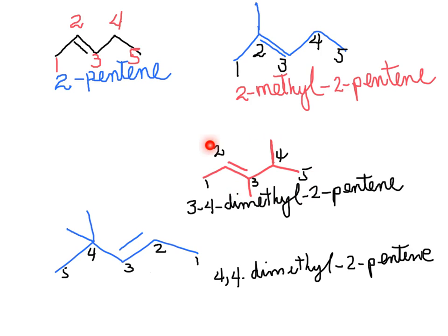When we start numbering for the third structure, we might think to start on the carbon with a branch, but the functional group — the carbon-carbon double bond — will take precedence over alkyl substituents. Therefore, this one is 3,4-dimethyl-2-pentene, because we have two of the same substituents, using a comma. In the second case for the di-substituted kind, we have the two methyl groups bonding the same carbon, carbon number four. The double bond is between carbon two and three again. We number one, two, three from this side — giving the double bond the smallest possible number. So this one is 4,4-dimethyl-2-pentene.